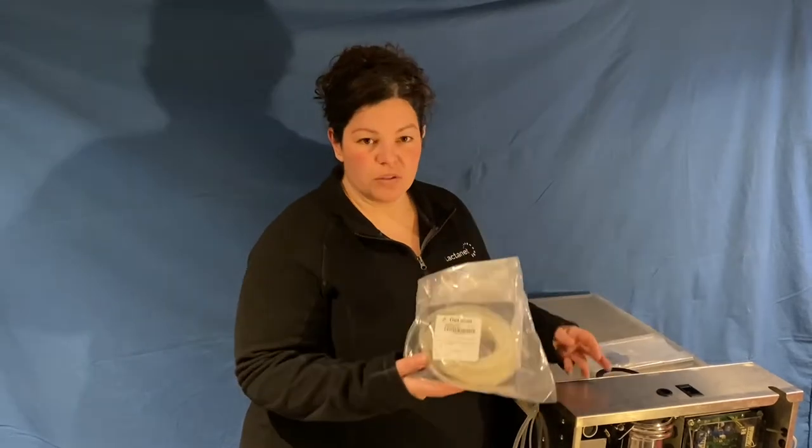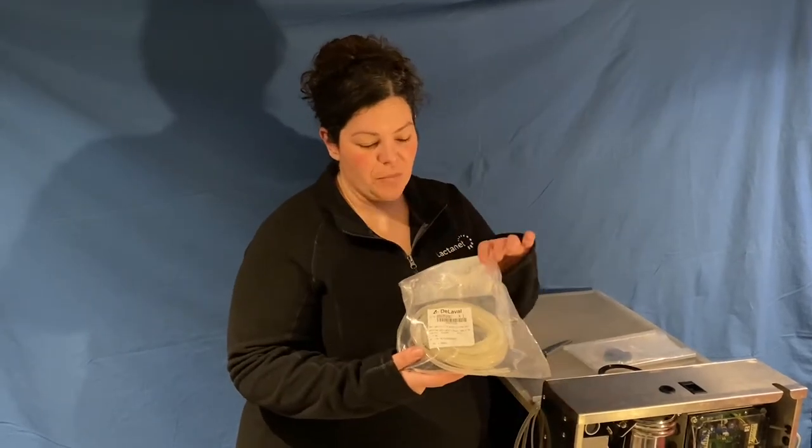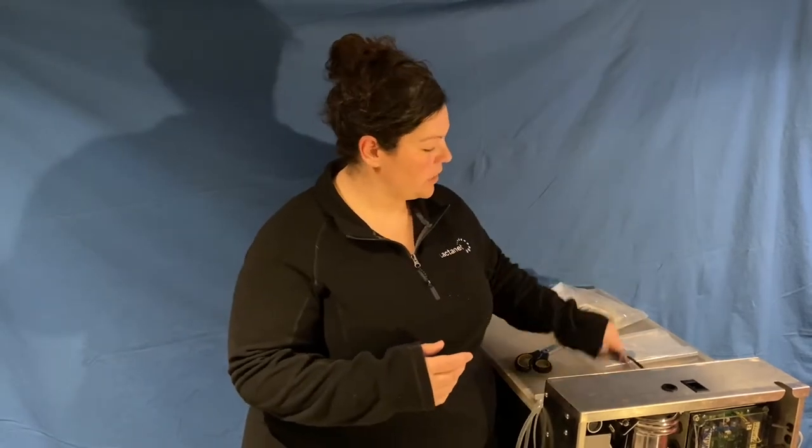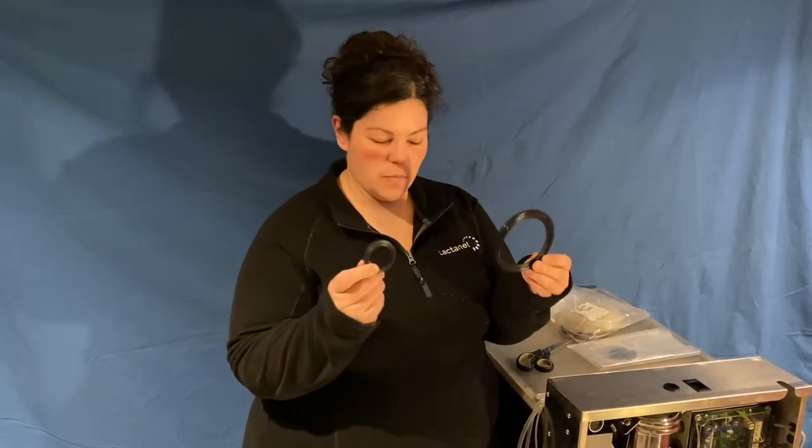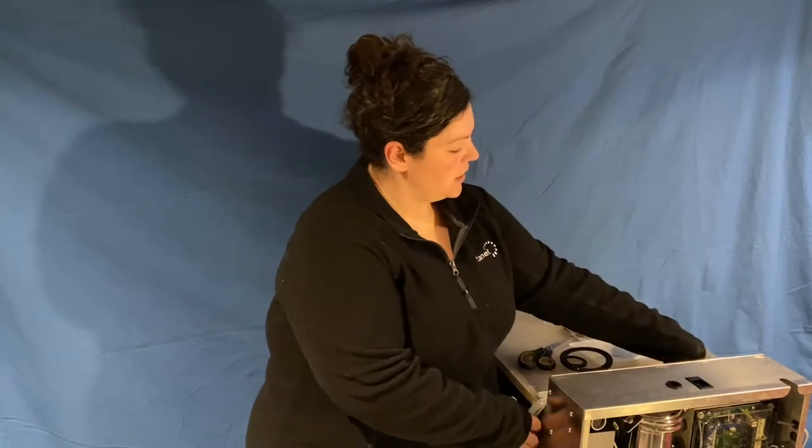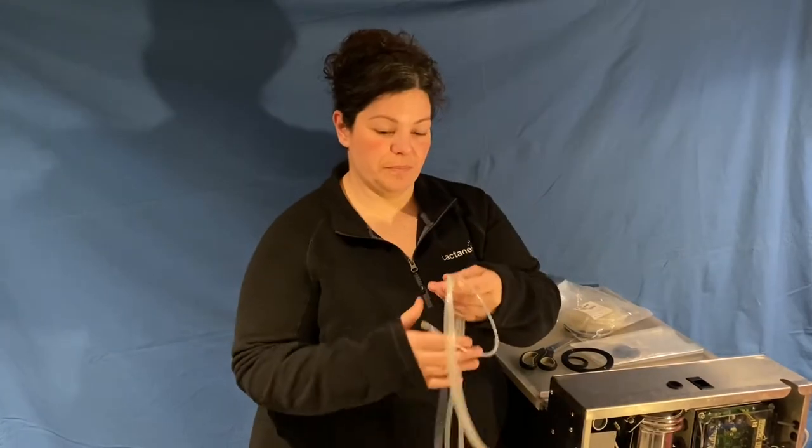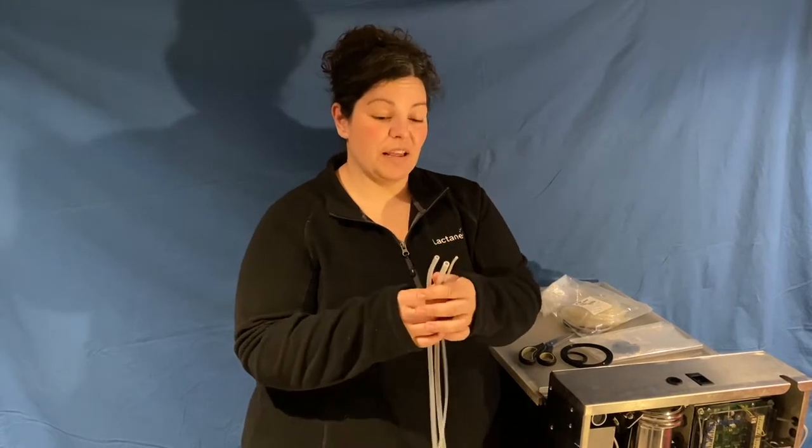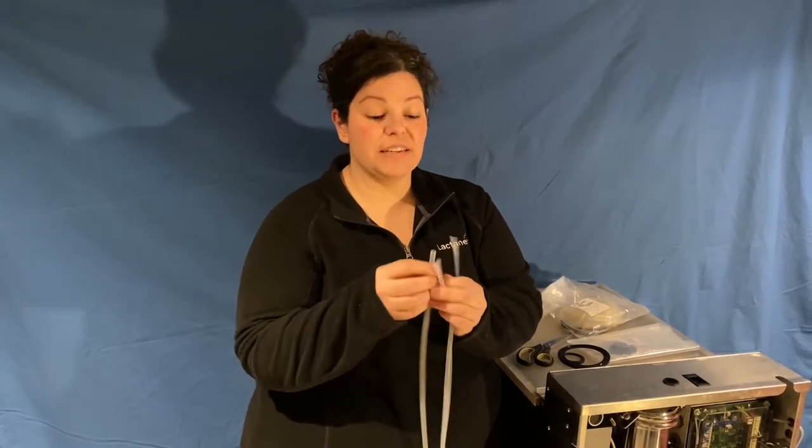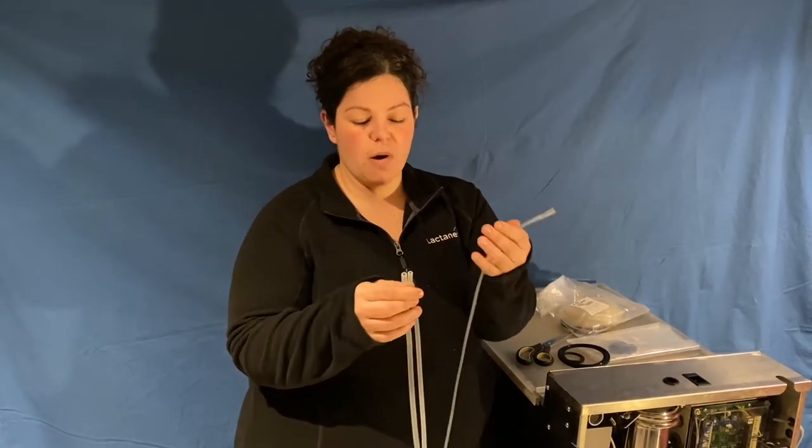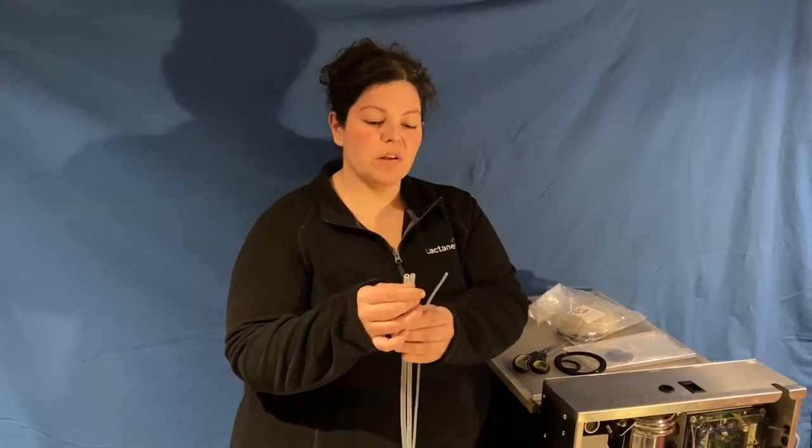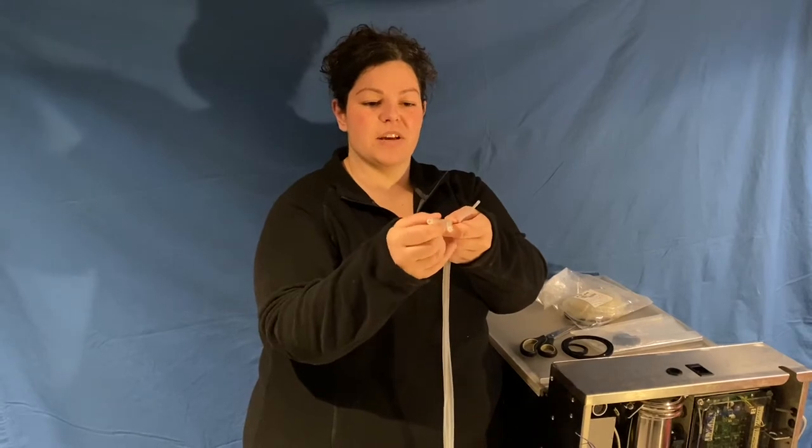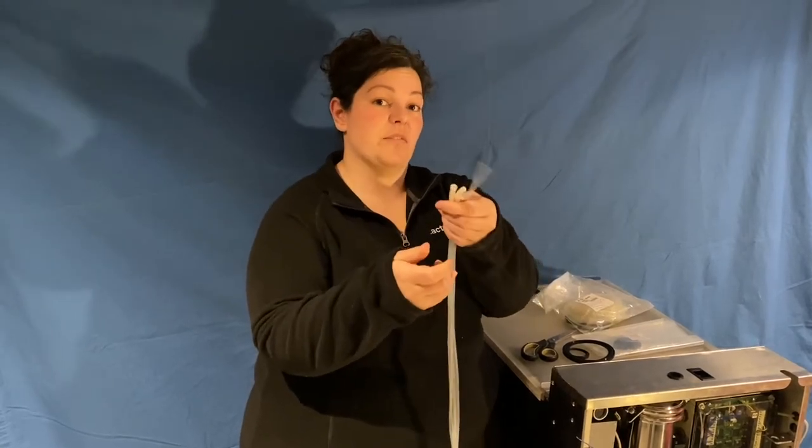You will receive a hose change kit in the mail from your district manager, and inside you will find two rubber gaskets, small and large, and three lengths of hose. It's important to recognize that these are three different lengths and thicknesses. We have the small spaghetti or milk line, and then two that look similar, but one is a larger diameter and thicker hose than the other.